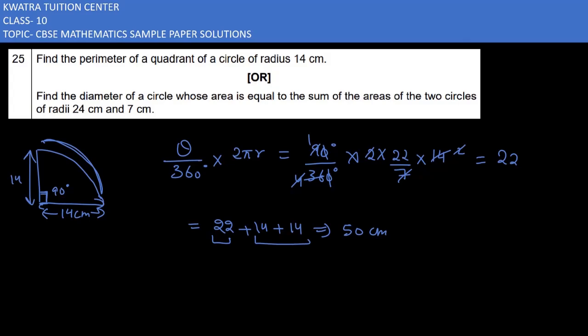So 50 cm is the answer for the first part. Now let's look at the second part. Find the diameter of a circle whose area is equal to the sum of the areas of two circles of radius 24 cm and 7 cm. We need to find the diameter of a new circle whose area equals the sum of the areas of the two given circles.